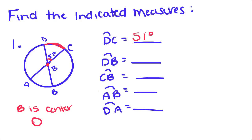Now they want the measure of arc DB, which is this arc right here. If you think about it, line DB is the diameter of the circle. So if I go from D all the way to the other side of the circle at B, I've completed half a rotation. So this arc is a semicircle, which means its measure has to be 180 degrees.